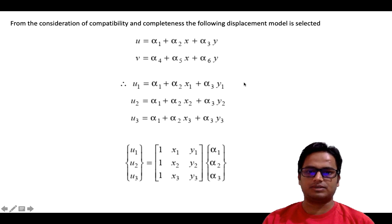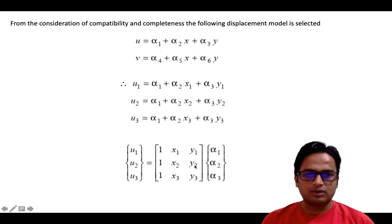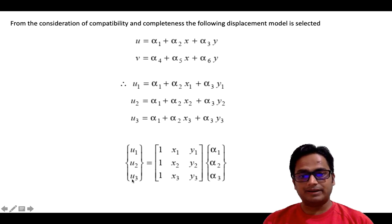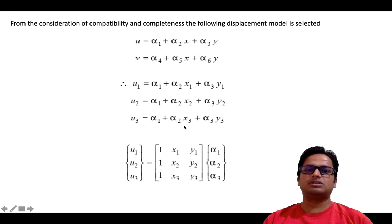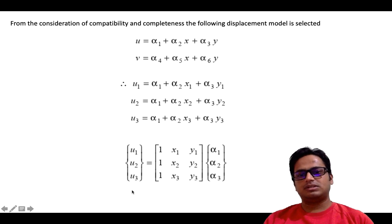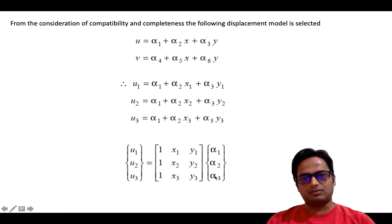Similarly, the second equation gives U2 equals 1·alpha1 plus x2·alpha2 plus y2·alpha3. Likewise, U3 equals 1·alpha1 plus x3·alpha2 plus y3·alpha3. This is the system of equations, and the unknowns alpha1, alpha2, and alpha3 need to be calculated.